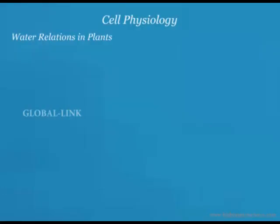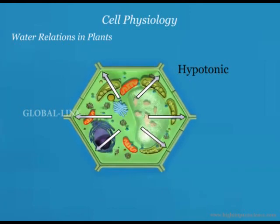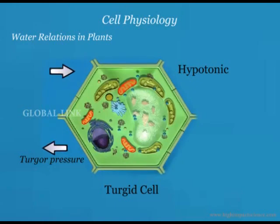Water relations in plants. If a plant cell is placed in a hypotonic solution, it will gain water through osmosis. However, unlike animal cells, plant cells contain a cellulose cell wall which gives them strength and prevents them from bursting. The vacuole enlarges as it gains water, pushing against the cell wall, causing what we call turgor pressure. If the cell becomes rigid, it is said to be turgid. The cell wall on its part exerts an equal and opposite pressure to the turgor pressure, called wall pressure.